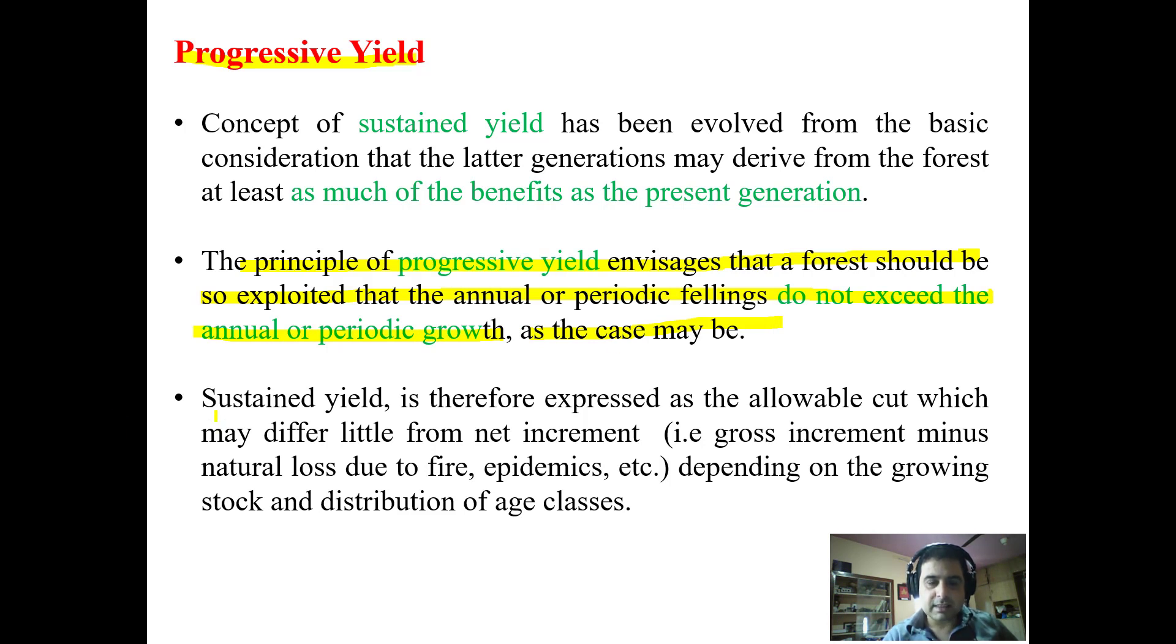So how is it different from sustained yield? Sustained yield is therefore expressed as the allowable cut which may differ a little from the increment, that is gross increment minus natural loss due to fire, epidemics, etc., depending on the growing stock and distribution of age classes.